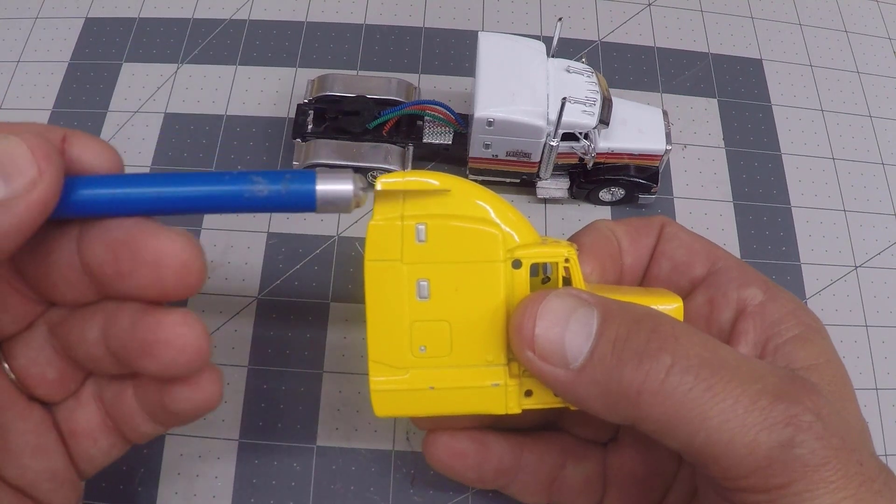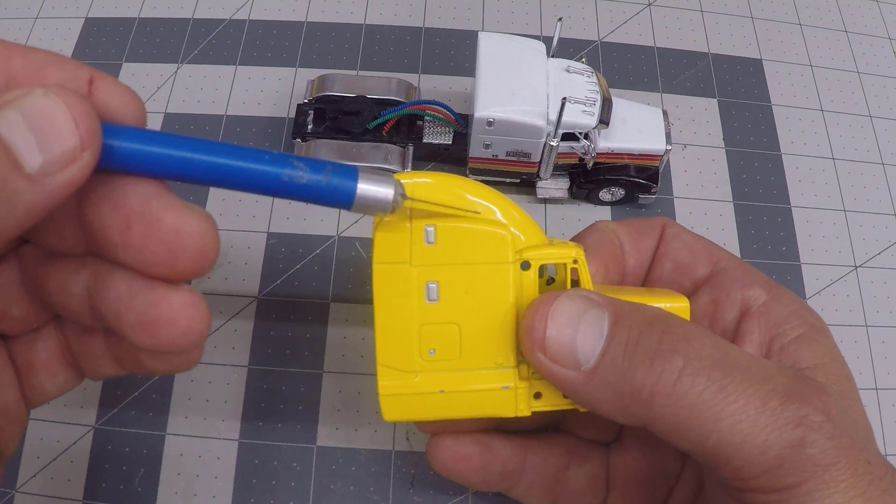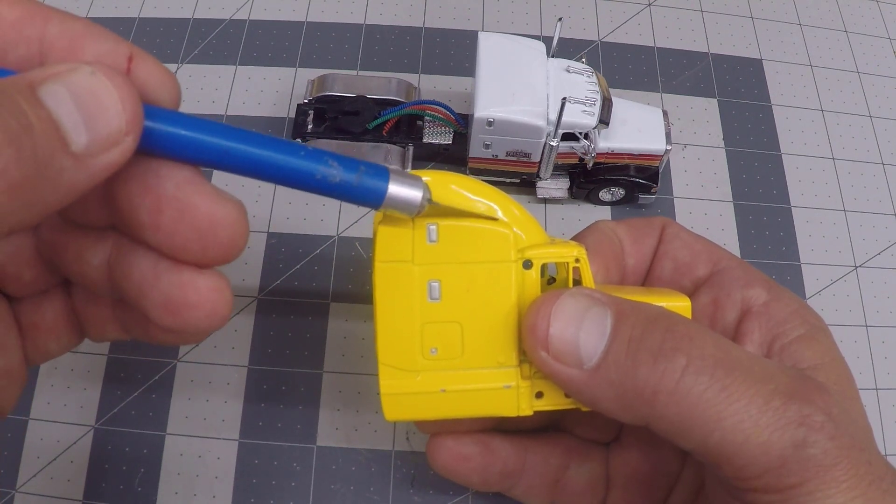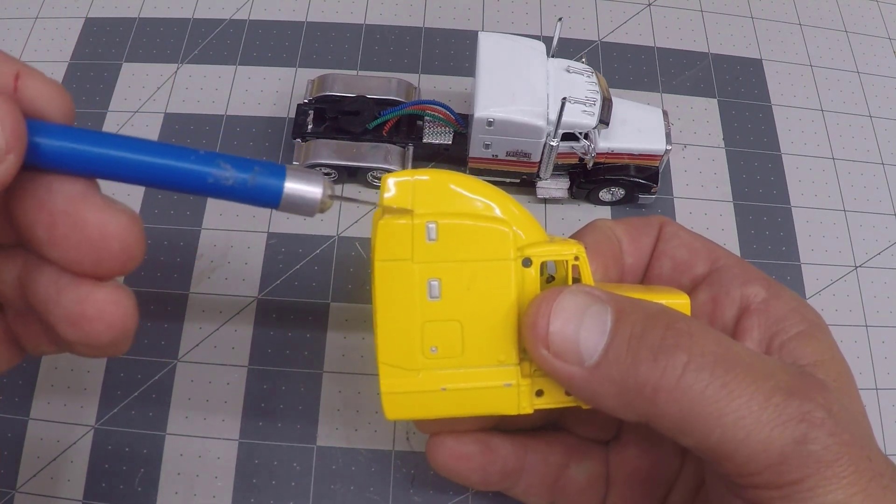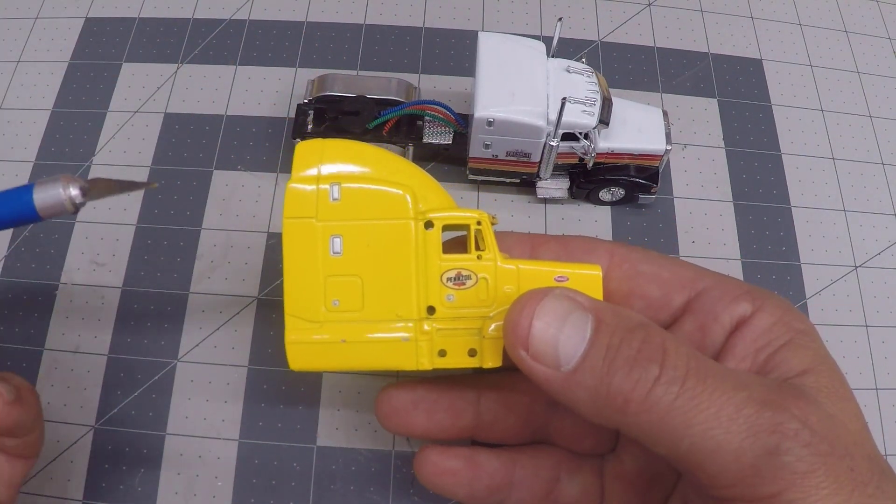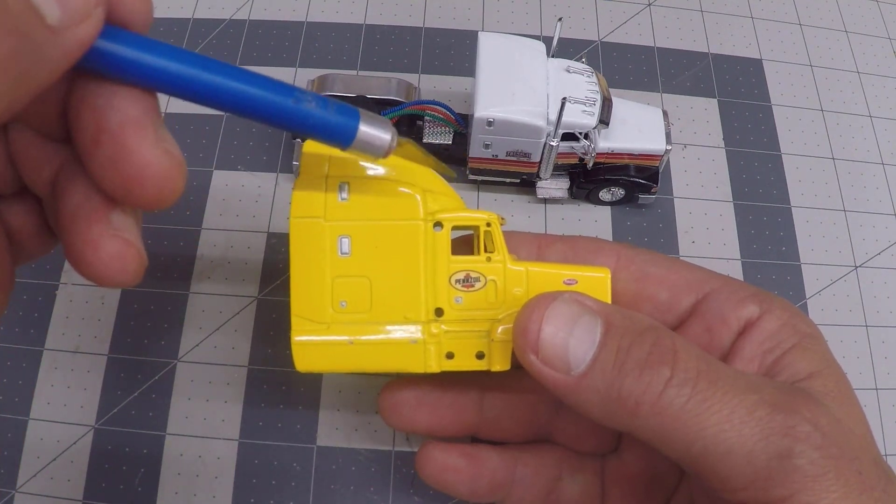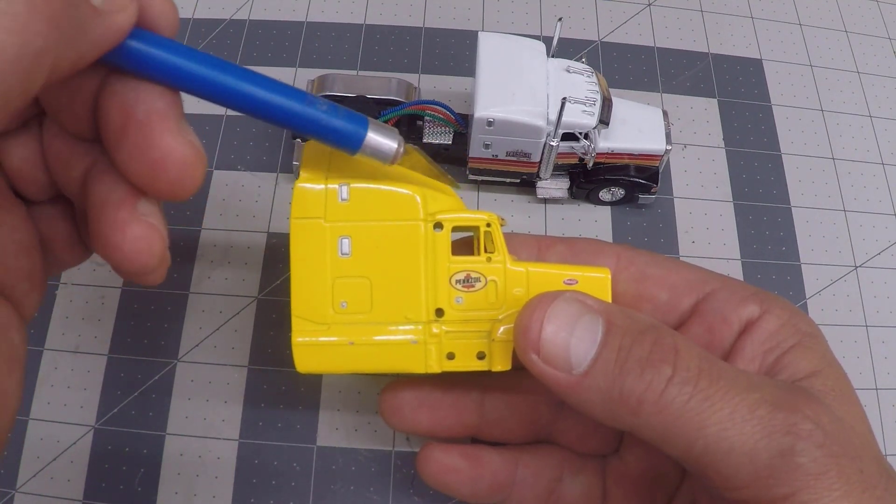Then use a file or rotary sander, some sort of power tool or hand tool, it's your choice, to remove any excess die cast so it's all smooth and even. One thing I did come to discover is that the roof cap does not match what you would see on an actual truck.